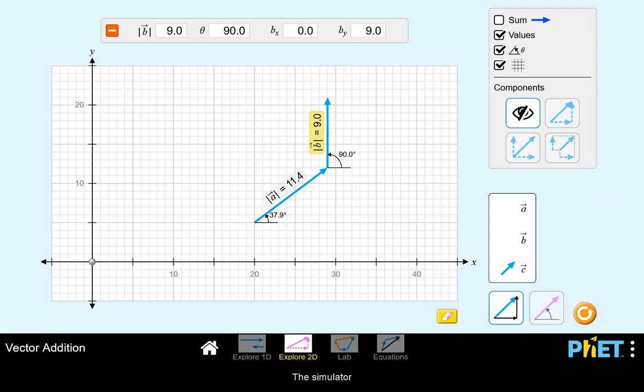The simulator can display and calculate the vector sum of the two vectors. The tail of the resultant vector connects to the tail of the first vector, and its head will match up with the head of the last vector.